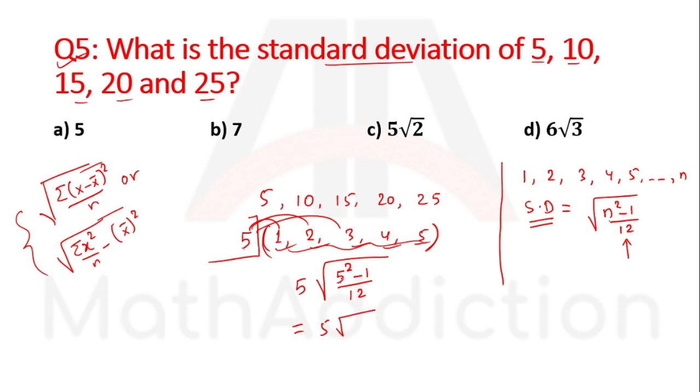That gives 5 times square root of 24 divided by 12, which equals 5 times square root of 2, or 5 root 2. Option C is the right answer.